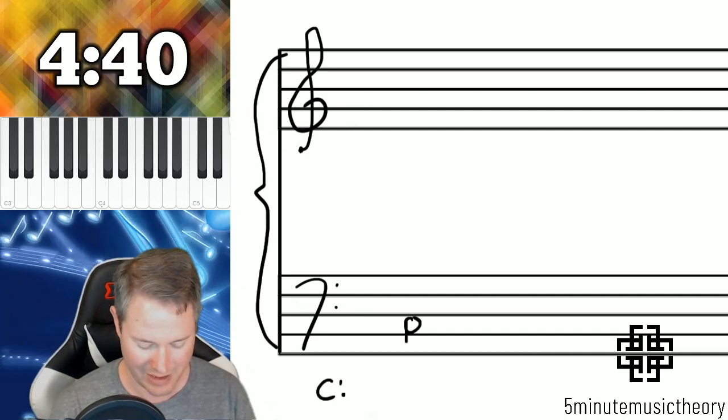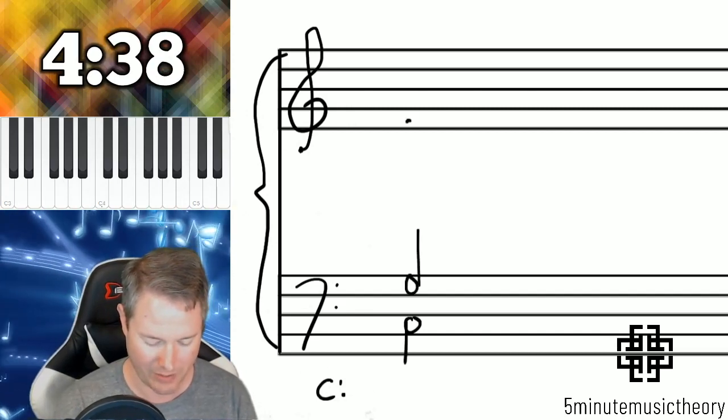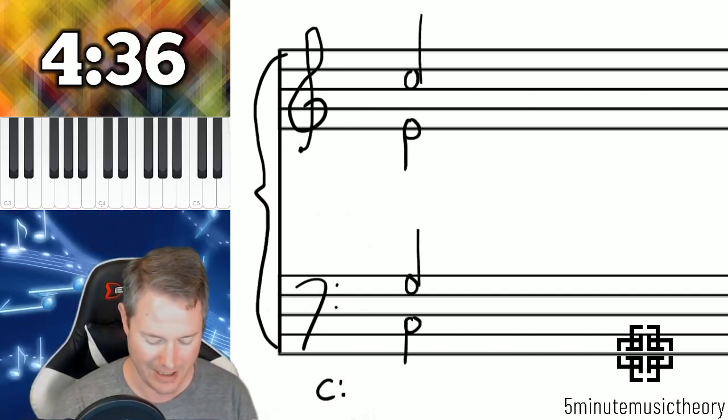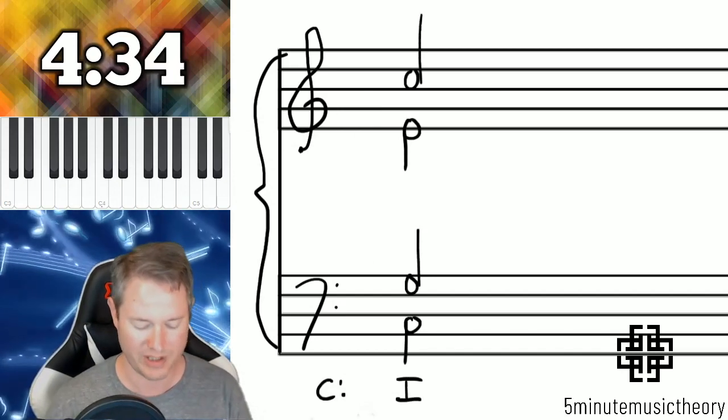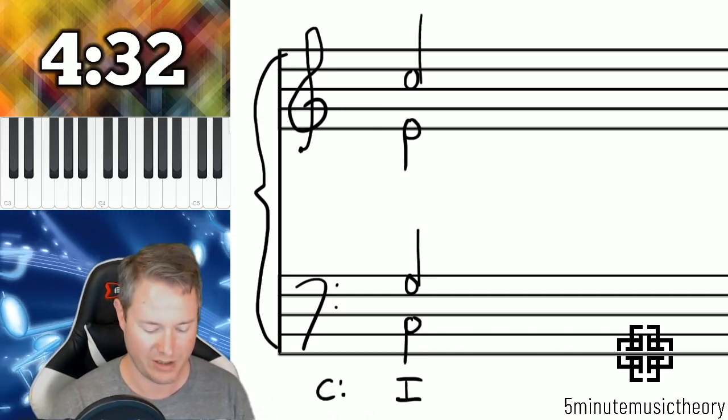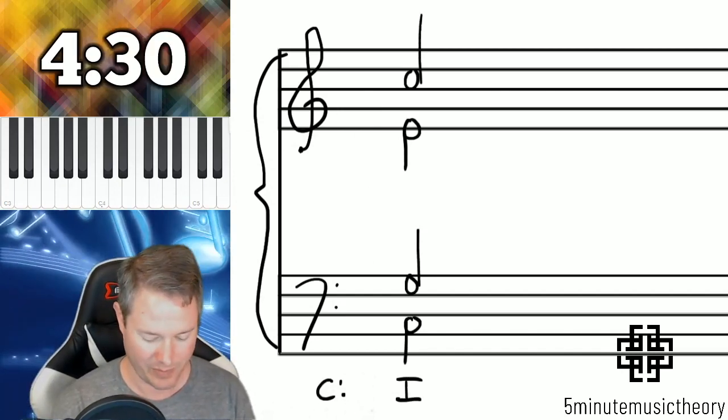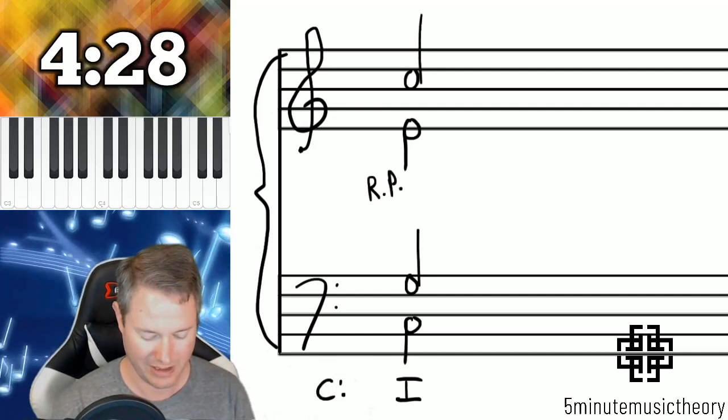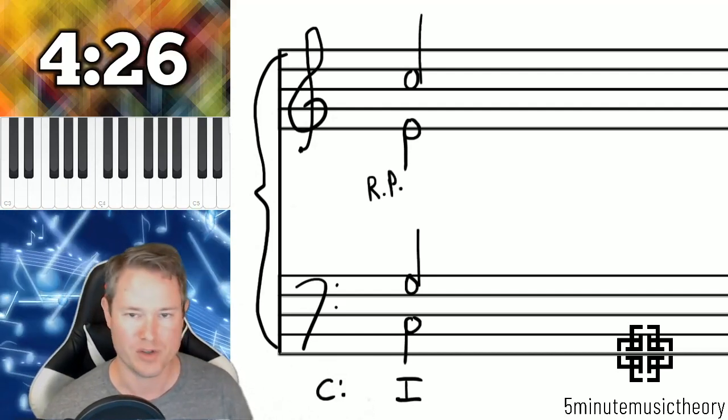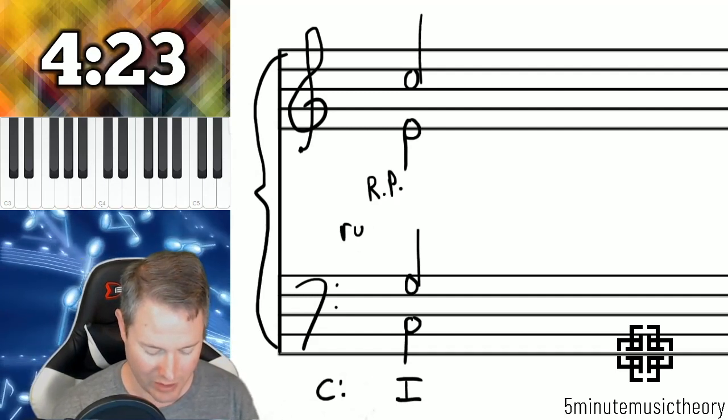And to do so we're going to use some examples in C major. I'm going to start by writing a tonic triad in C major in root position. So for root position triads I'm going to try to use the space here in the middle of the staff. I'll use RP to stand for root position.